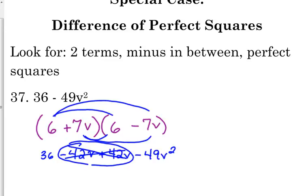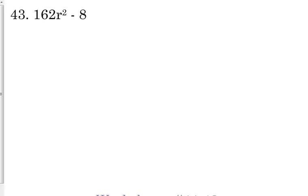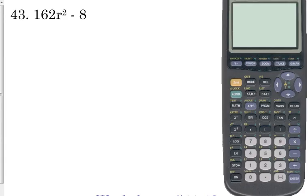Let's look at number 43. So, 43, we've got the two terms. We've got the minus sign in between them. But, 162 and 8 are not perfect squares. 162 and 8 are not perfect squares. So, we should be thinking, maybe there's a GCF. And, they're not perfect squares. Let's see if 8 is the GCF. Let's see if 162 is divisible by 8. It is not. So, let's divide it by 4. That doesn't work. So, let's divide it by 2. I know that one's going to work because it's even. Our GCF here is 2.